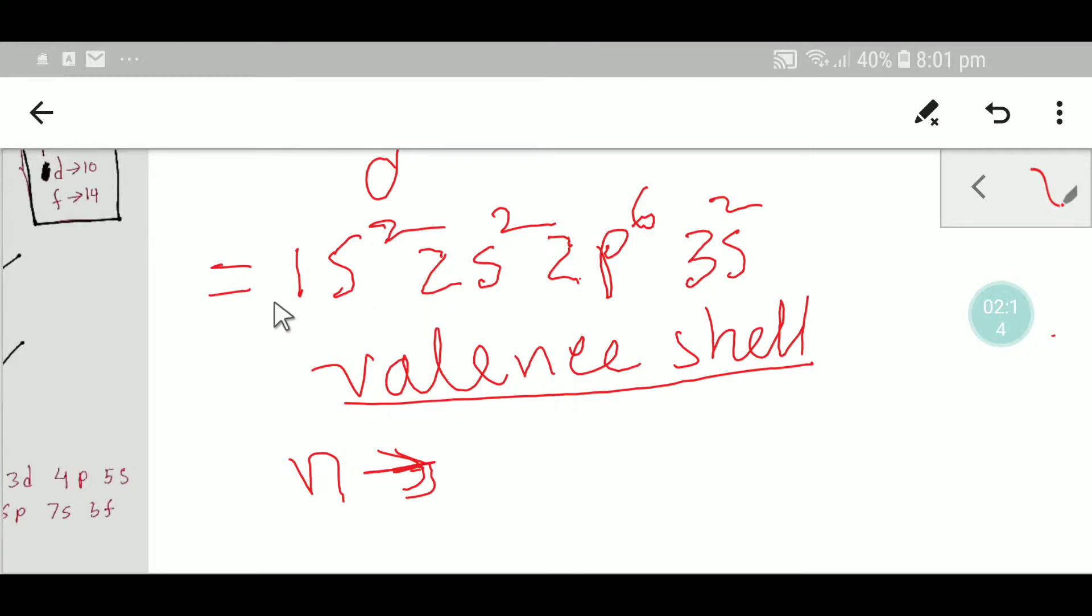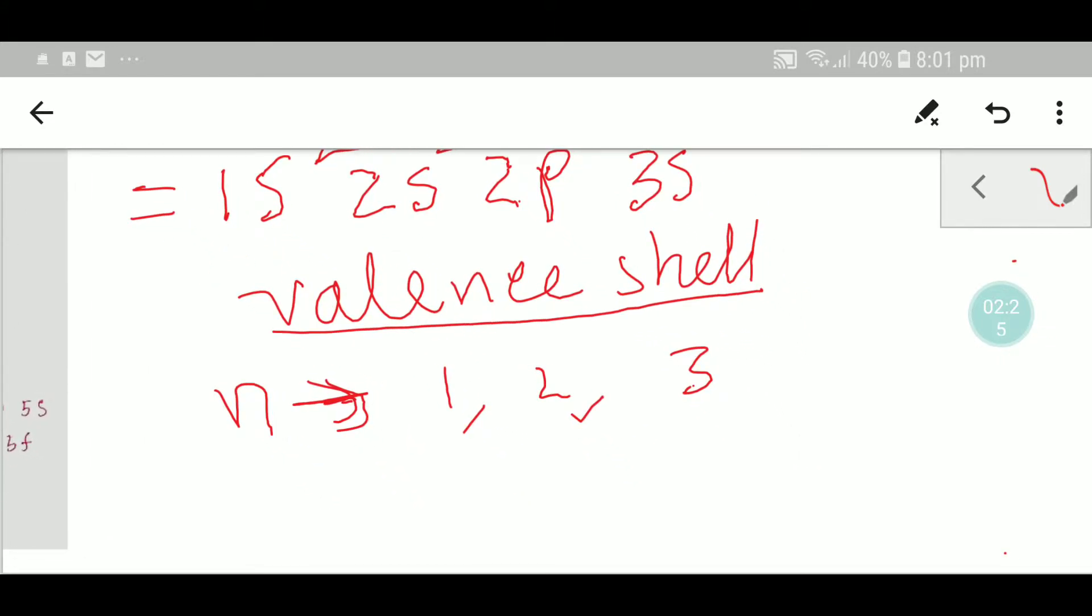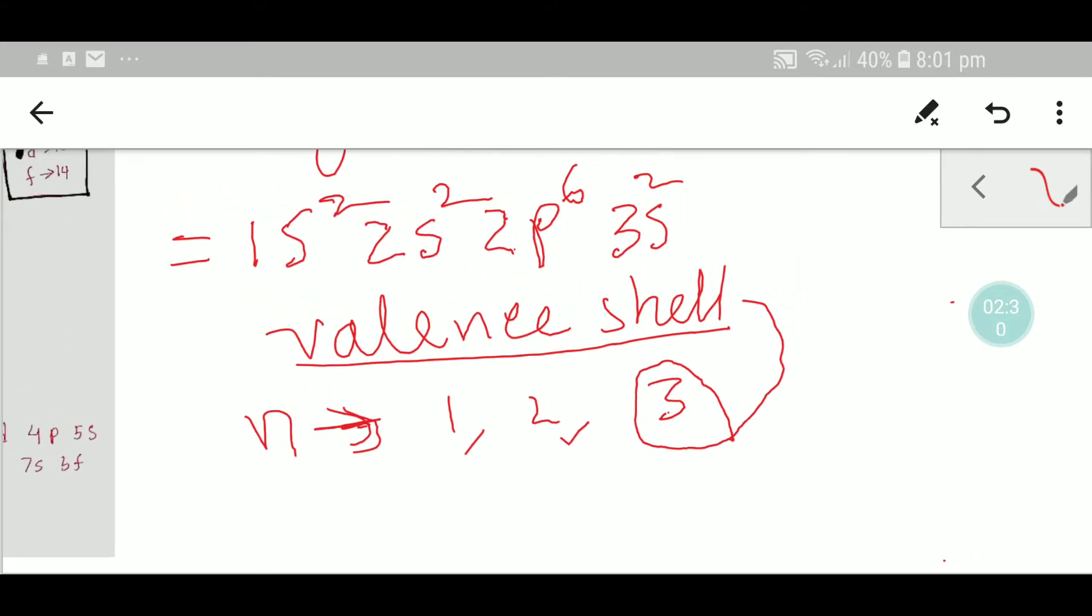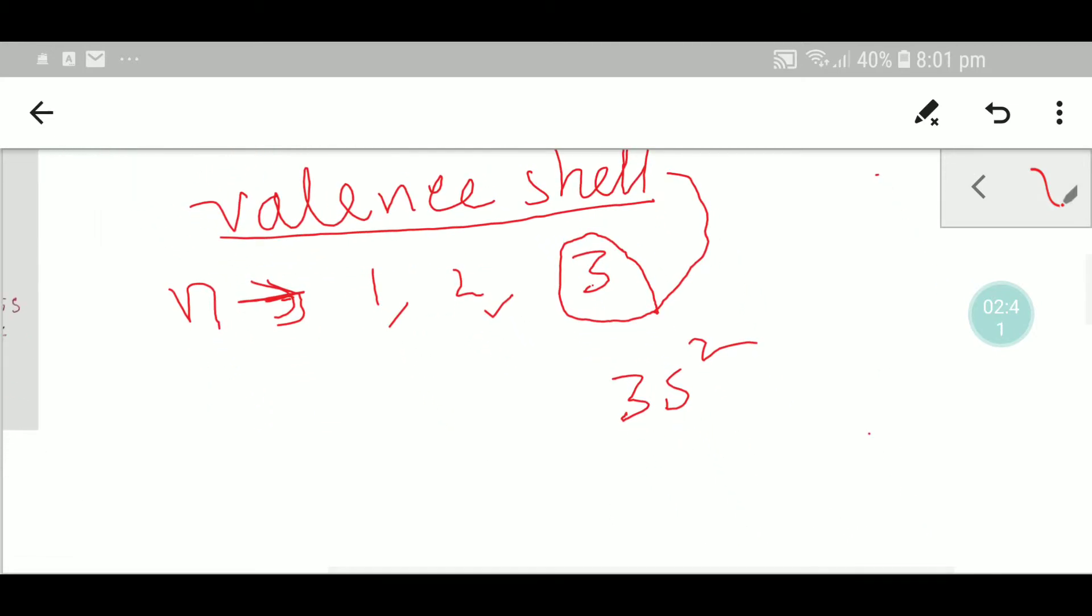Here we are getting principal quantum number 1, 2, then 3. We know that the highest value of n indicates the valency shell, so we have to consider 3. So 3s2 is the valency shell of magnesium, and 3s2 has 2 electrons.